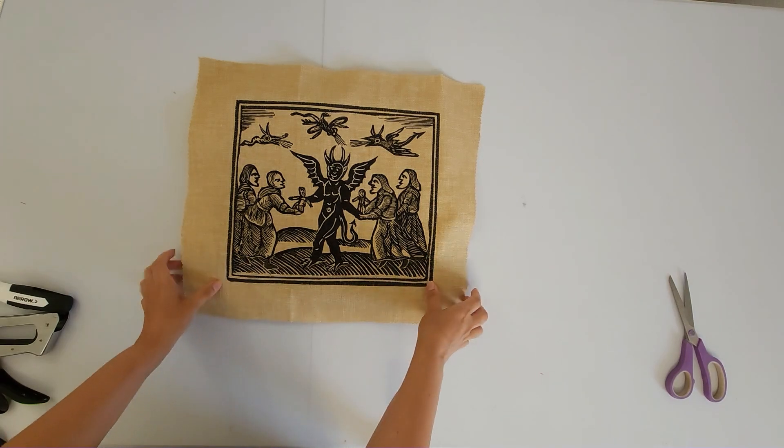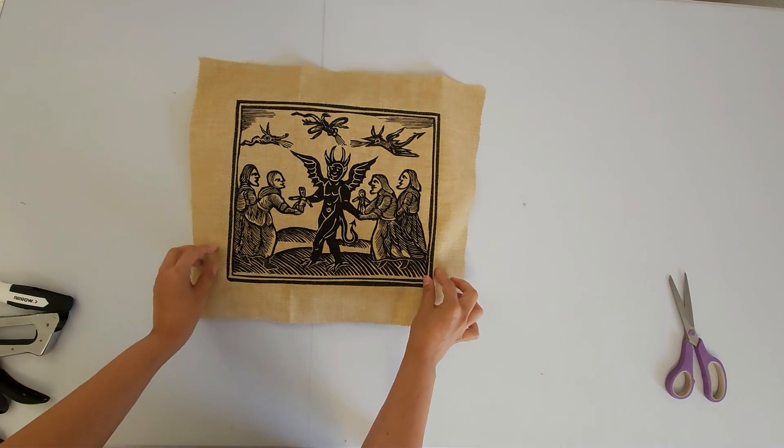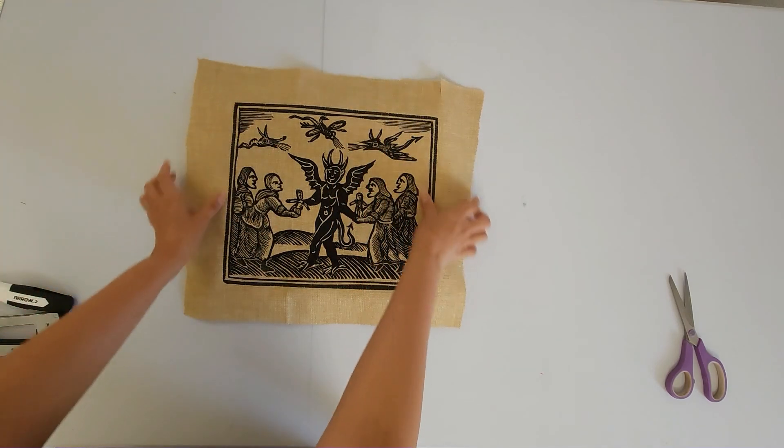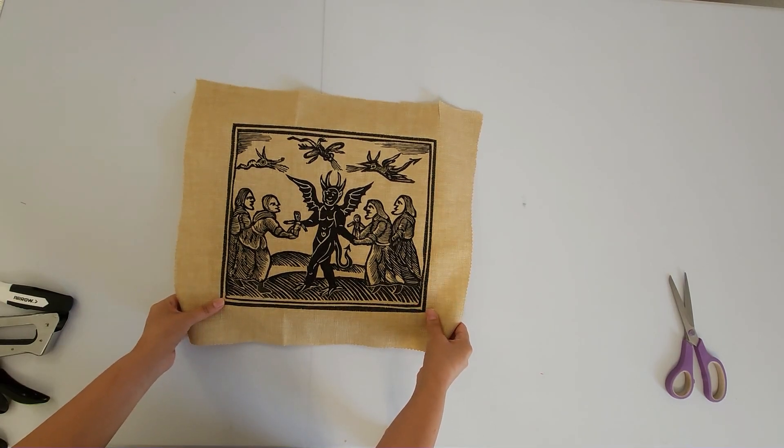So this embroidery piece is not going to cover exactly the canvas. We are going to have some fabric on the edges. I'm just going to kind of eyeball it and try to get it as centered as I can.